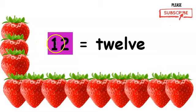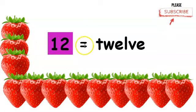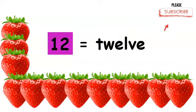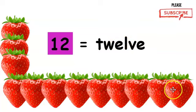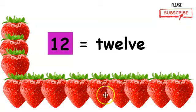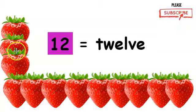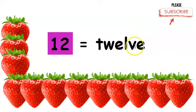Twelve. This is the number twelve. This is how you write twelve. And we have twelve strawberries below. One, two, three, four, five, six, seven, eight, nine, ten, eleven, twelve. Twelve.